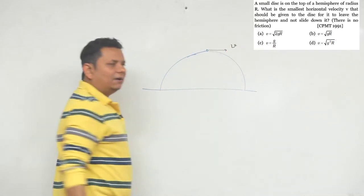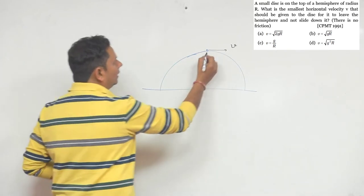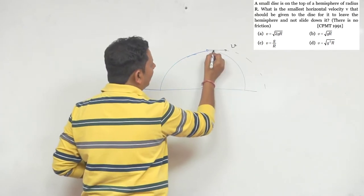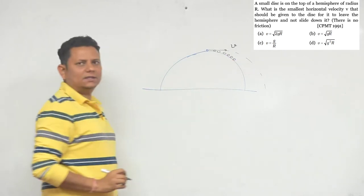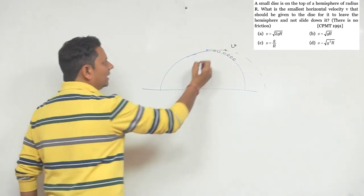The question is what should be the minimum velocity v so that this particle goes like this, rolls over it like this. Alright, so this is the scenario. Now if we notice this,